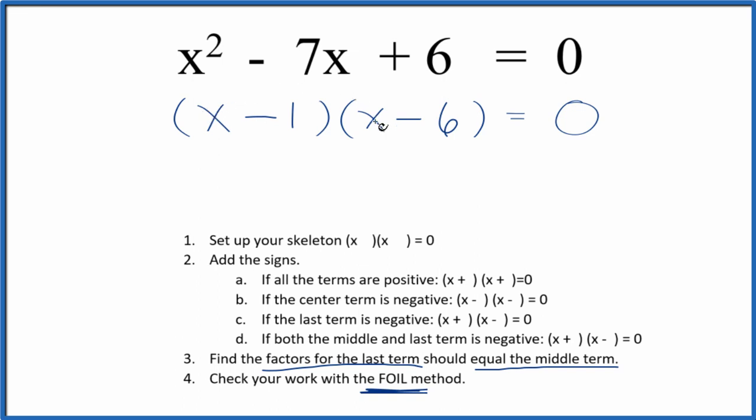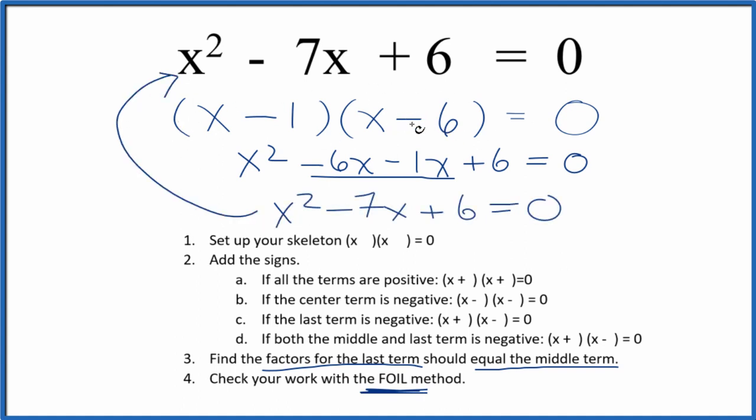We'll multiply the first terms, the outside, inside, and then last. That gives us, and we can combine these terms right here to get, and that's what we started with up here. So we factored this equation correctly.